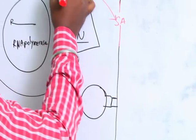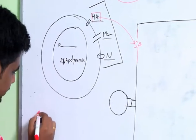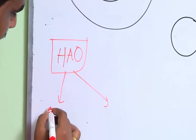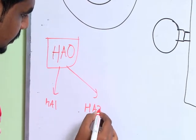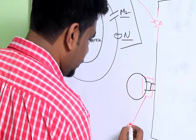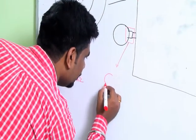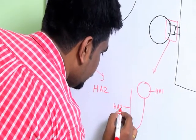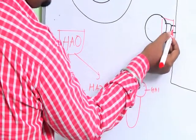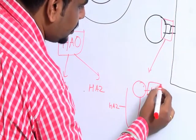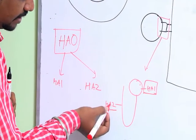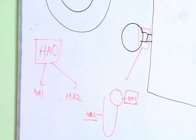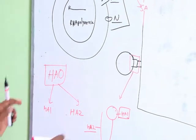Hemagglutinin is not formed in its final form — it is formed from a precursor called HA0, which is hydrolyzed into HA1 and HA2. Zooming into the structure: HA1 forms the globular head, which attaches to the sialic acid, and HA2 is the fusion stem or fusion domain, which attaches to the fusion peptide present in our cell.